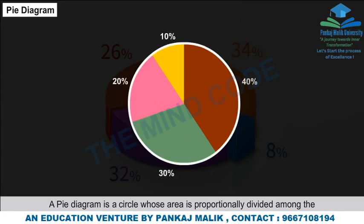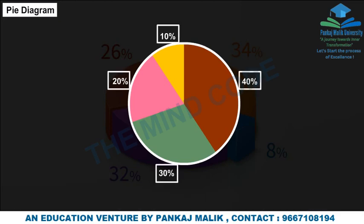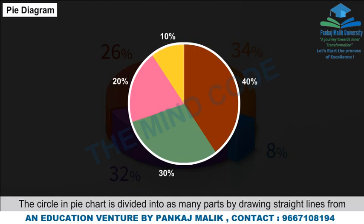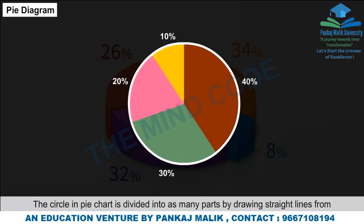Pi Diagram: A pi diagram is a circle whose area is proportionally divided among the components and shown as a percentage of the total. The circle is divided into parts by drawing straight lines from the centre to the circumference.